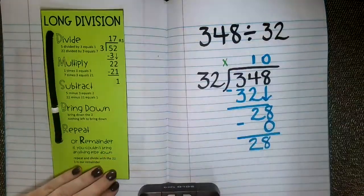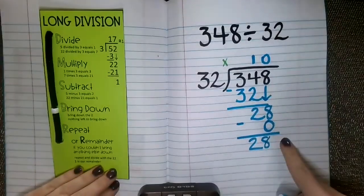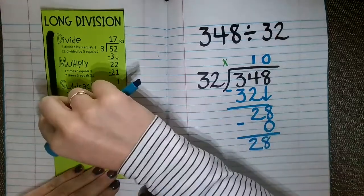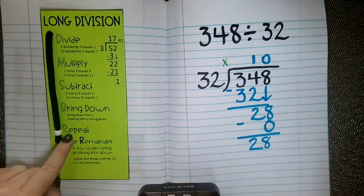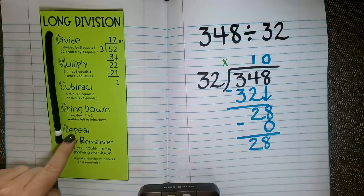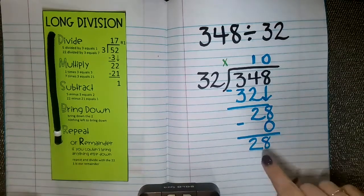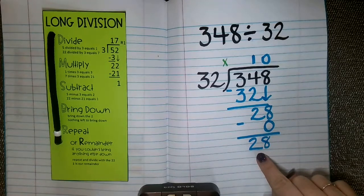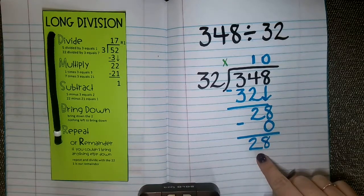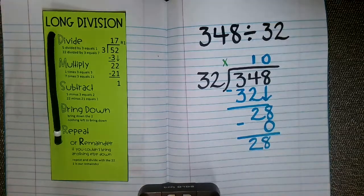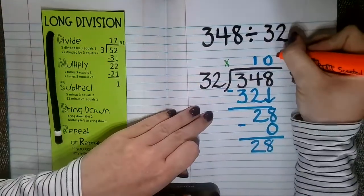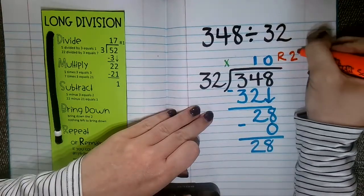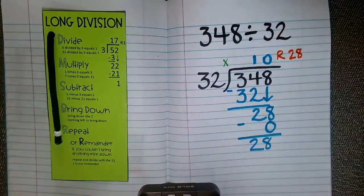Then I kind of come to a standstill here, because I have nothing else to bring down. So, therefore, I have nothing else to repeat. So you can see that down here, if I have nothing else to repeat, then that just means that this answer that I'm left with is going to be my remainder. So my remainder is going to be 28. You can just represent that with an R.